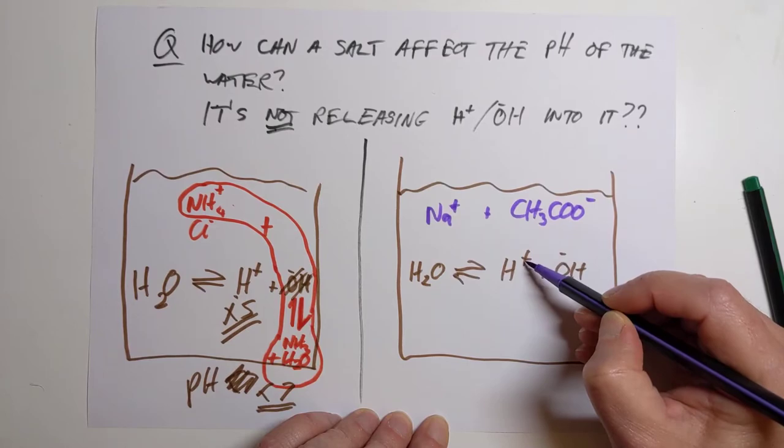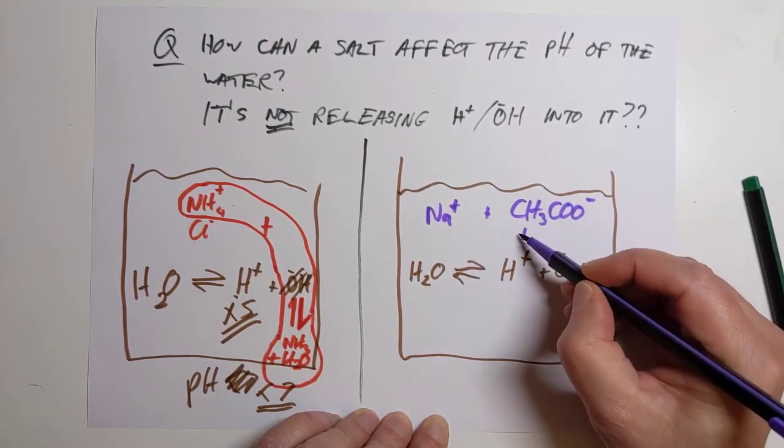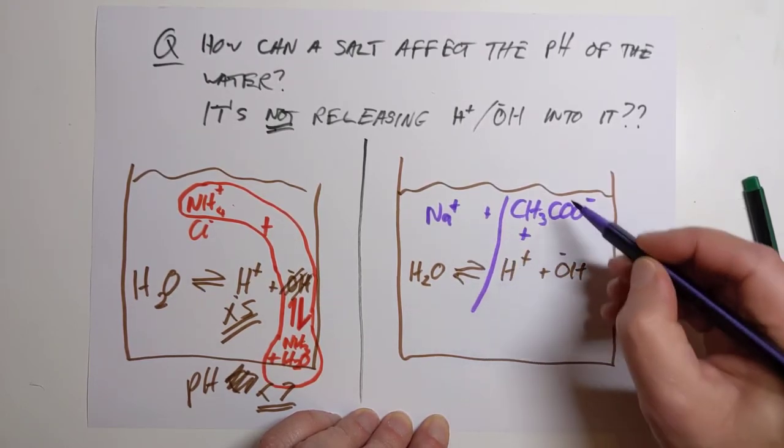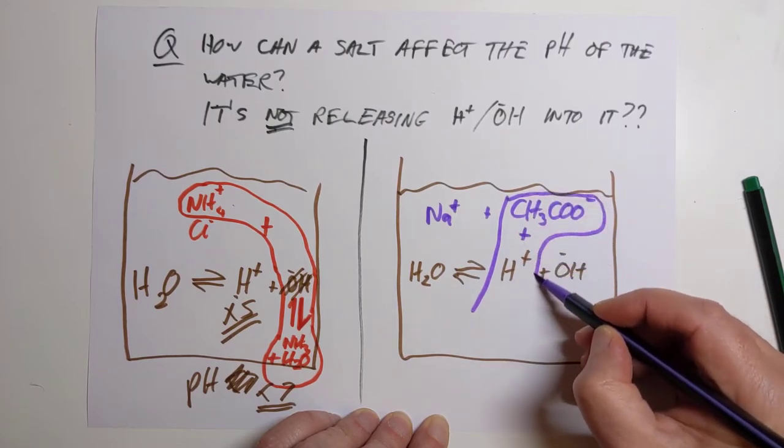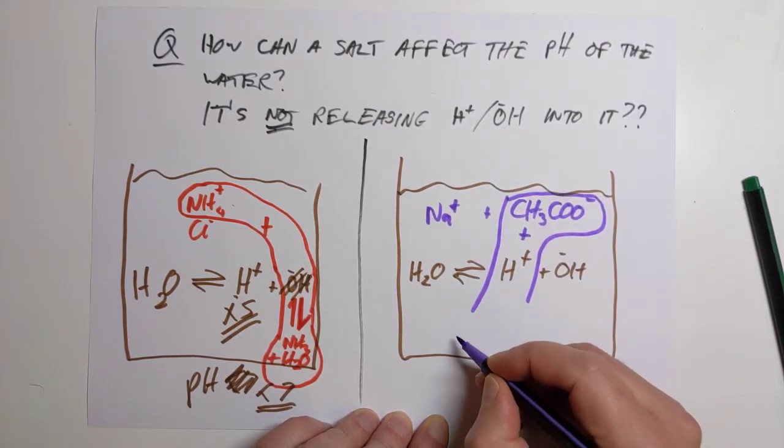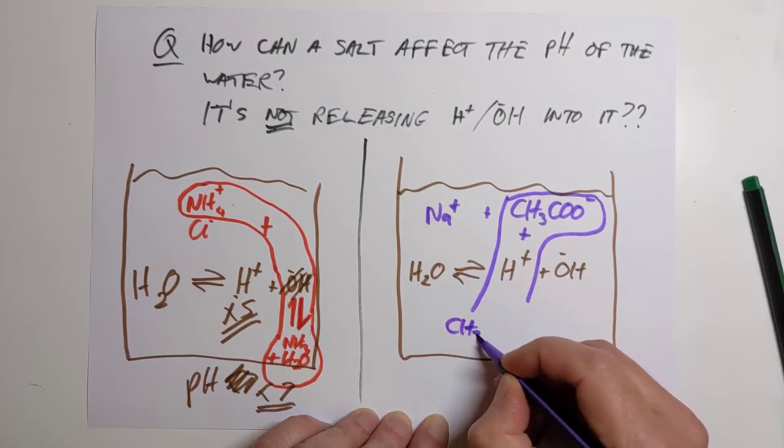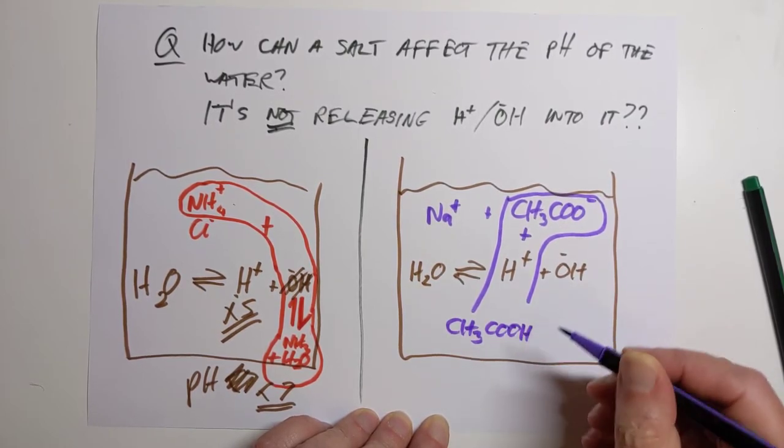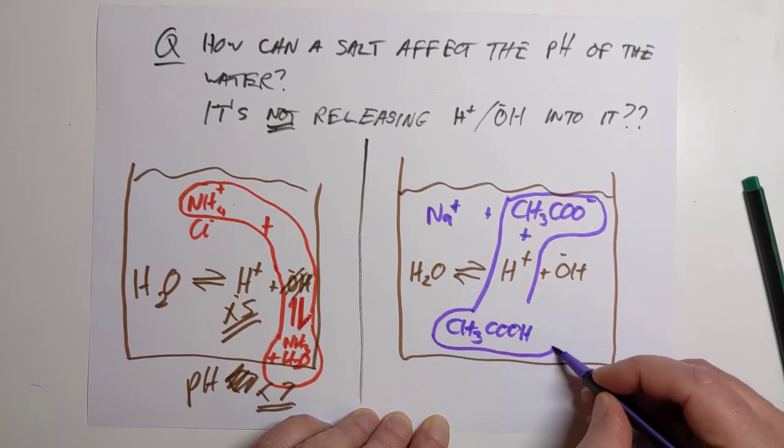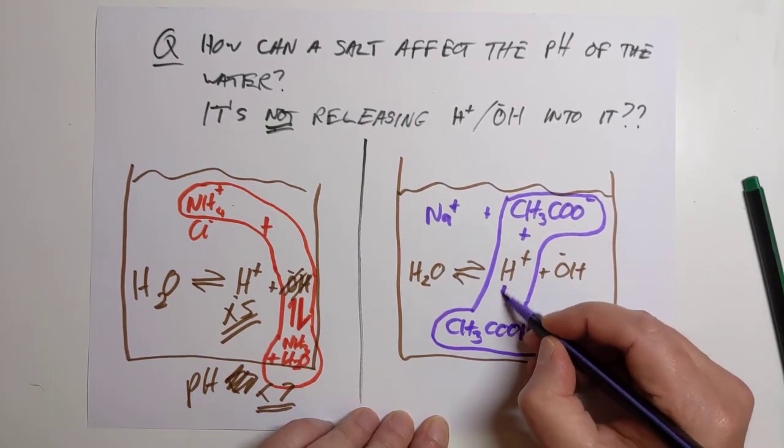It will go alkaline. That's because the hydrogen plus and the ethanoate ions will team up with each other. And they will form ethanoic acid molecules.